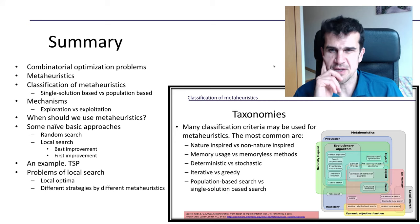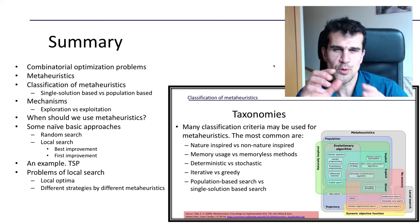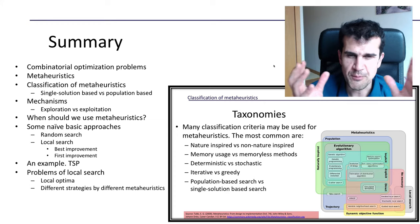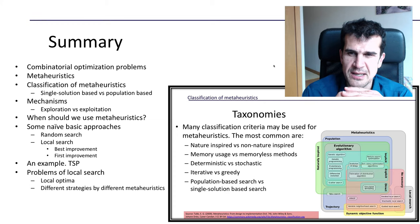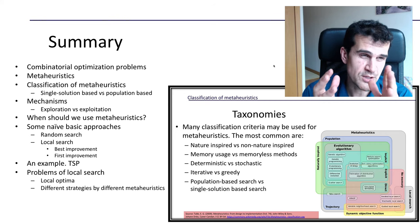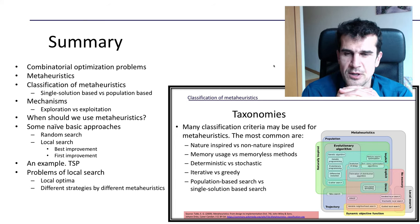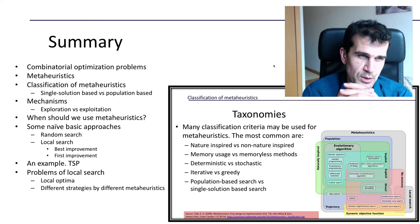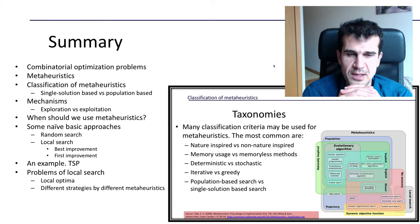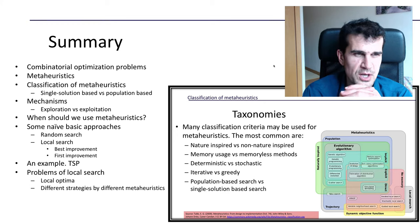After that, we saw a classification of metaheuristics. We saw that we can classify them according to different criteria: some are inspired by nature, some are not; some use memory, some do not; some are deterministic, while most of them are stochastic; some are iterative, most of them, but there are some that are greedy. The most common criterion to classify them is whether they are single-solution based or population based.